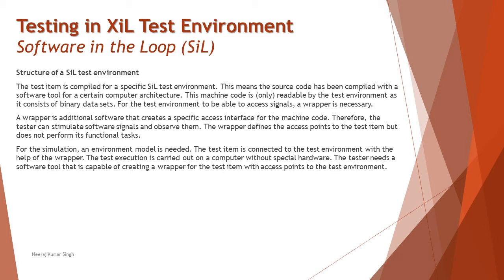This step will give you an idea of whether your control logic — that is, the controller model — can be converted to code and if it is hardware implementable or not. You should log the inputs and outputs here and match what you achieved in the previous step. If you experience a significant difference, you may have to go back to MIL, make necessary changes, and then repeat steps one and two.